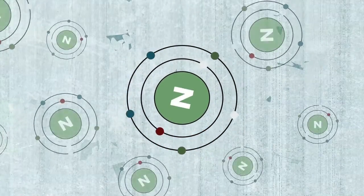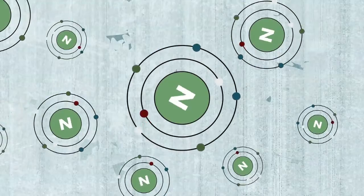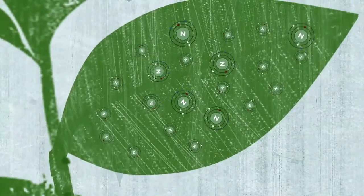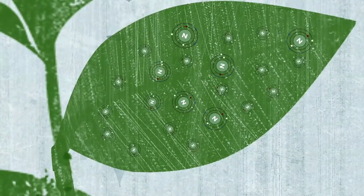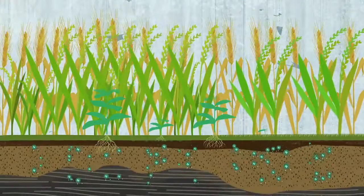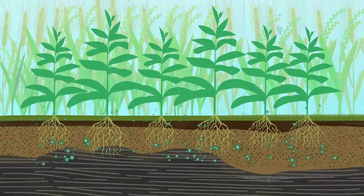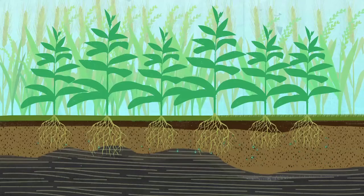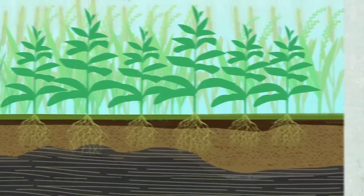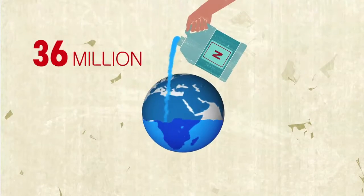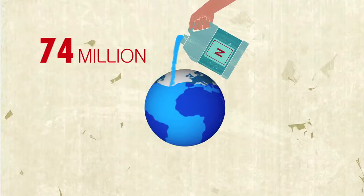Nitrogen is crucial to all forms of life. It's an essential plant nutrient with a major role in crop productivity, yet nitrogen is often unavailable in the soils for crops. As a result, the world's farmers apply up to 112 million tons of nitrogen fertilizers each year.